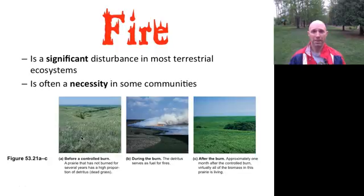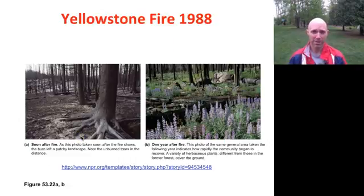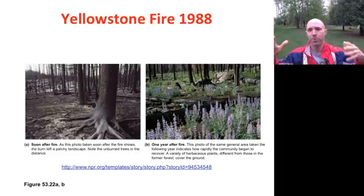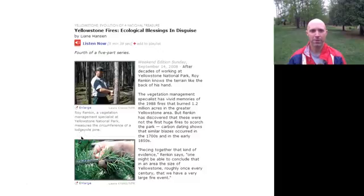One of the more common examples of a disturbance would be fire. Keep in mind that many disturbances are built into the evolution of species, so fire in some ecosystems is a necessity. One example is the Yellowstone fire of 1988. You can see the landscape charred soon after the fire, but just a year later the ecosystem was rebounding quite a bit. This article describes it as a blessing in disguise.